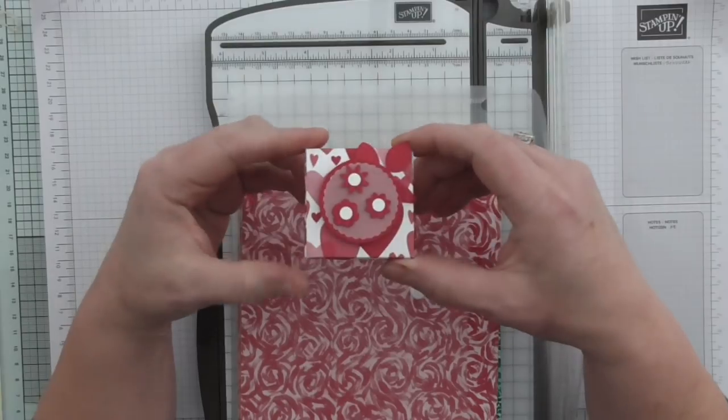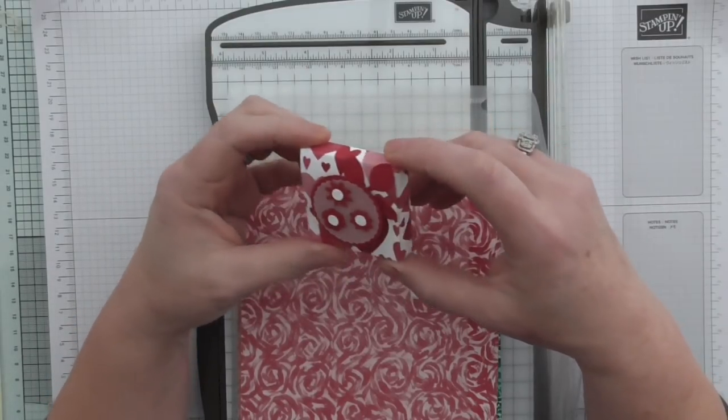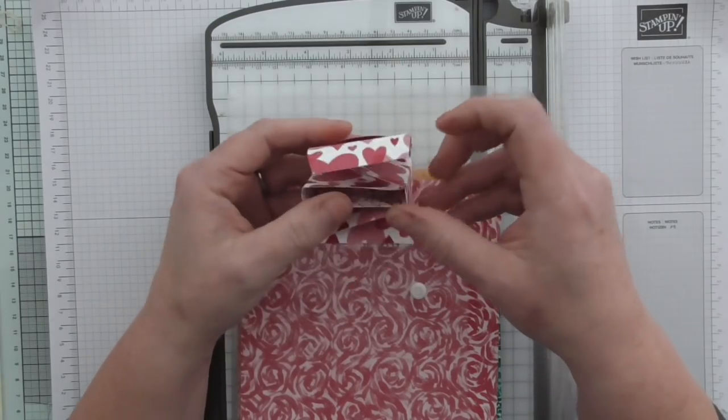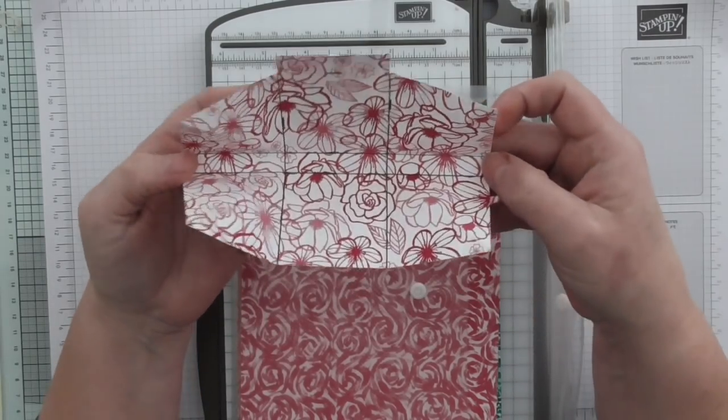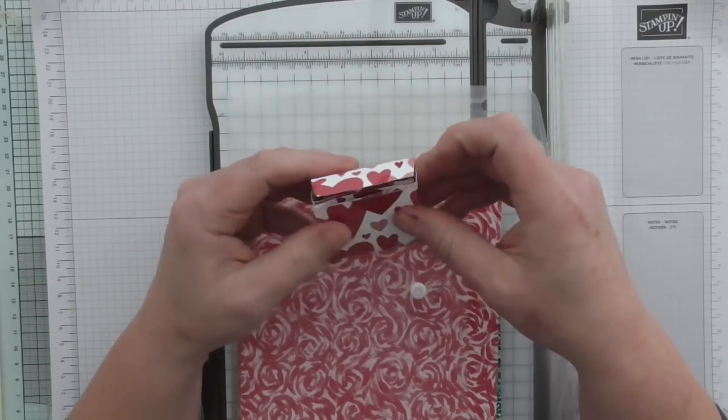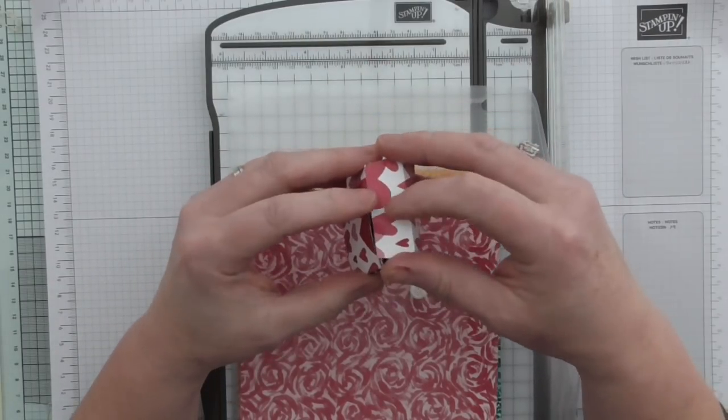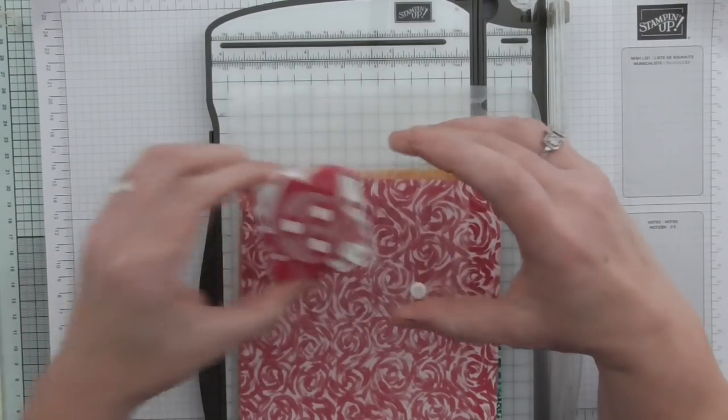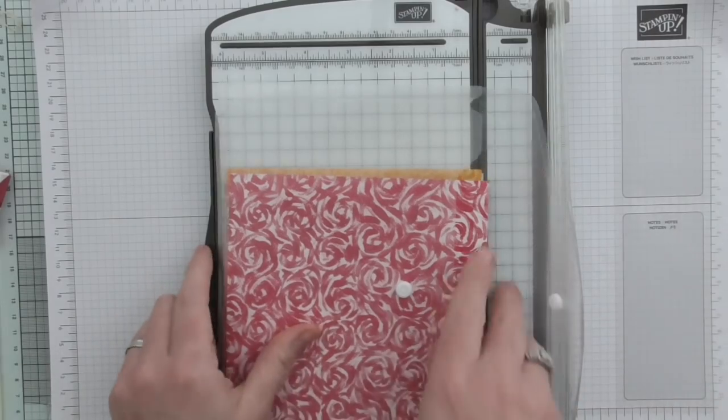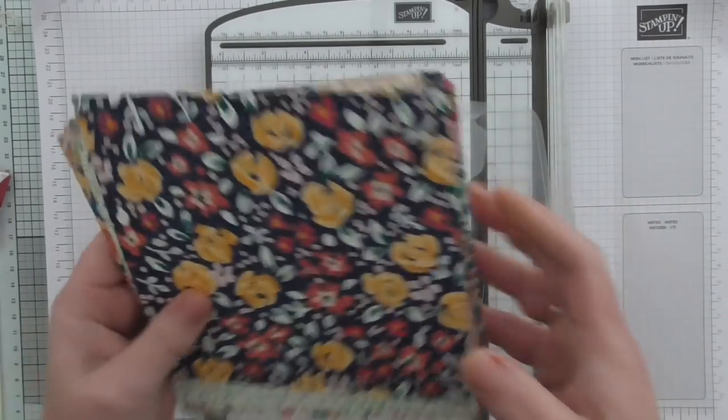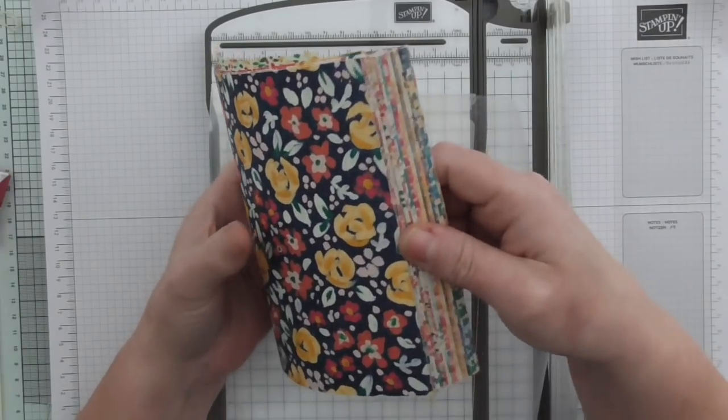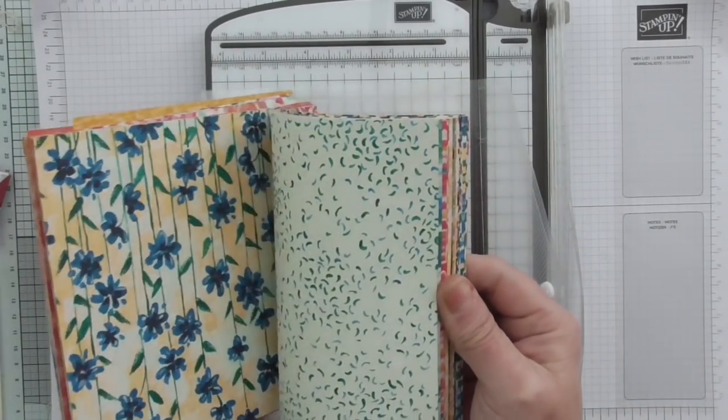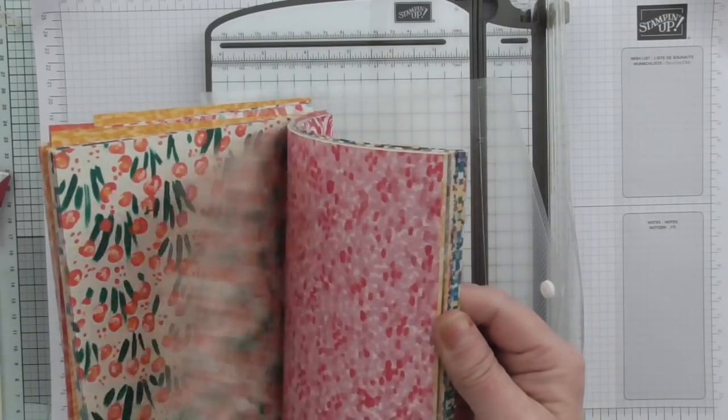She sent me this lovely little box with Ritter Sport Chocolate in it. It's a little origami fold box and I thought I'm having that idea for my on-stage swaps. I had a look how it was made and came up with the measurements. Whether they're exactly the same as Katrina's I couldn't tell you, but it won't be far wrong. I'm using Garden Impressions because I've got loads of it.